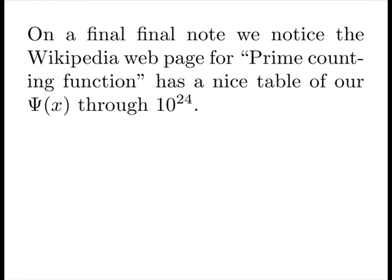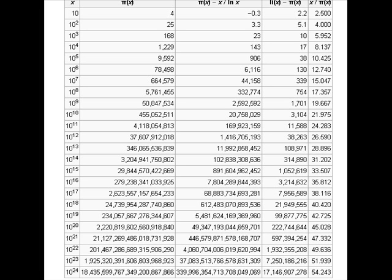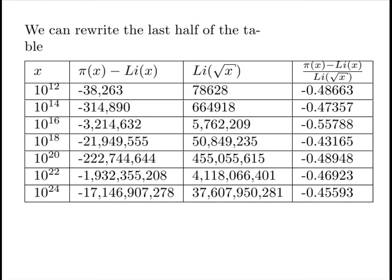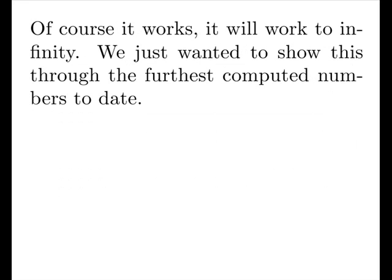On a final, final note, we notice the Wikipedia webpage for prime counting function has a nice table of our psi of x through 10 to the 24. We'll flash it for you, but it's admittedly a little unreadable. We can rewrite the last half of the table as follows. And sure enough, we can extract from the data everything we need to know. And the Riemann hypothesis is of course true all the way through. Of course it works. It will work through infinity. We just wanted to show you, show this through the furthest computed numbers to date. Thank you.